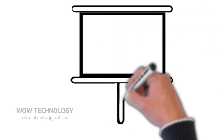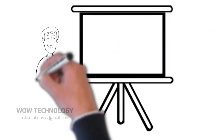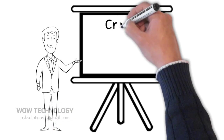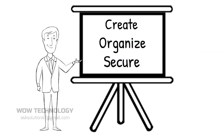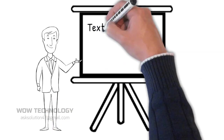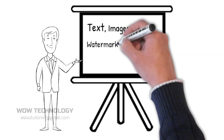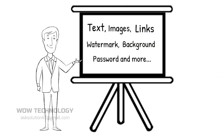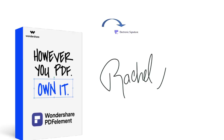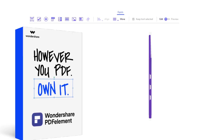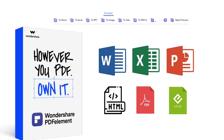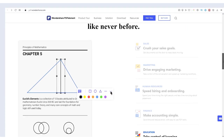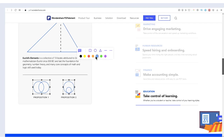PDFElement is a powerful yet easy-to-use PDF editing system where you can create, organize, and secure your files. You can add text, images, links, watermarks, backgrounds, and you can even protect your PDF document with a password. You can add your e-signature, add forms, and convert your PDF to lots of other formats and more. In short, PDFElement gives you full control over your PDF content with its intelligent technology.